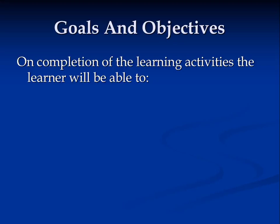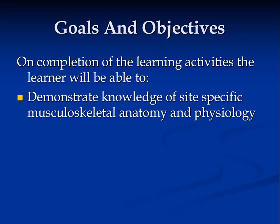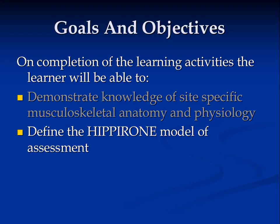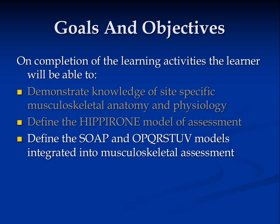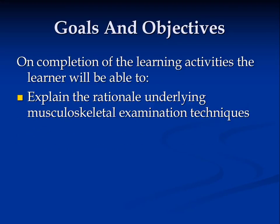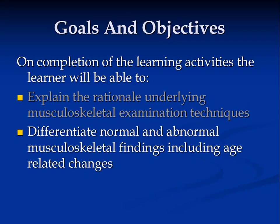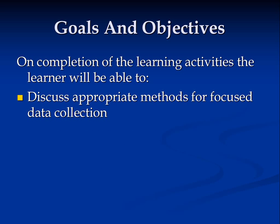There are many goals and objectives I want you to realize during this series of courses. First, on completion, you're going to be able to demonstrate knowledge of site-specific musculoskeletal anatomy and physiology, define the Hippiron model of assessment, define the SOAP and OPQRSTUV models integrated into musculoskeletal assessment, explain the rationale underlying musculoskeletal examination techniques, differentiate normal and abnormal musculoskeletal findings including age-related changes, and discuss appropriate methods for focused data collection.